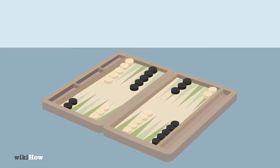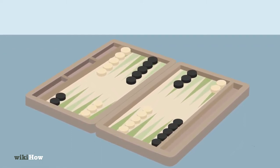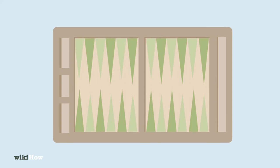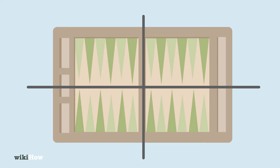Backgammon setup is simple once you know the layout of the board. A backgammon board has 24 narrow triangles called points that alternate in color and are grouped into four quadrants of six.